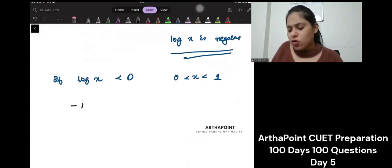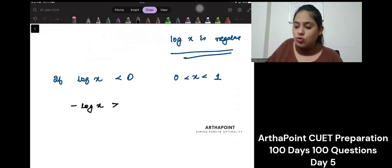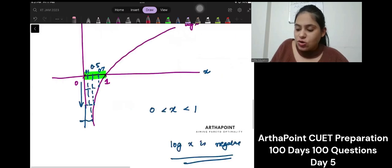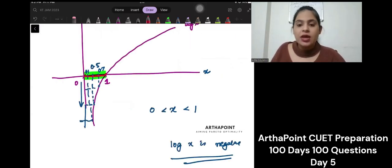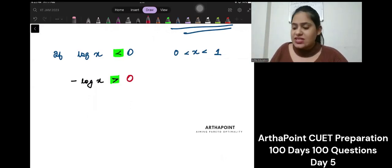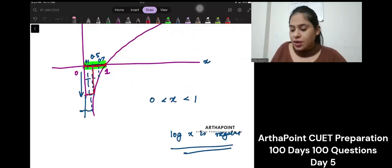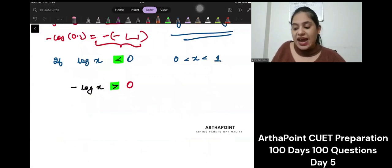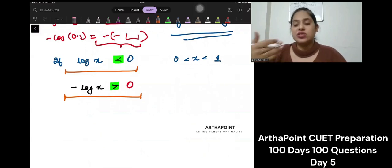So, what will be minus of log x? When I say minus log x, it will be greater than 0. Is this clear? log x is less than 0, between 0 and 1. 0 to 1, log x was negative. So, if log x is negative, it means that minus log x will be positive. If log x is less than 0, minus log x will be greater than 0. I am repeating it, but I want you to understand the concept.